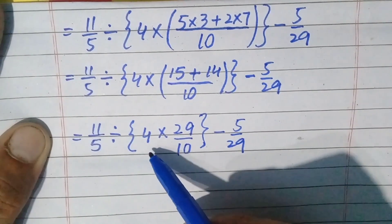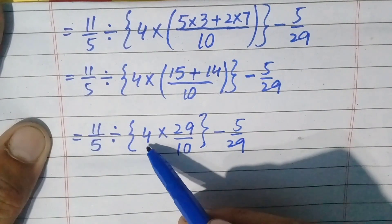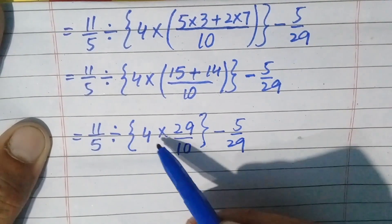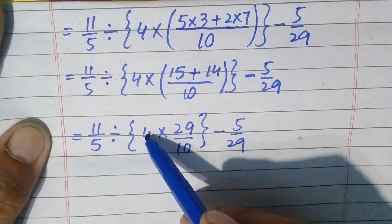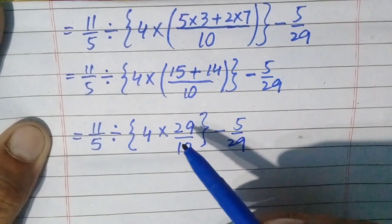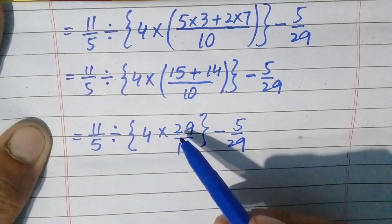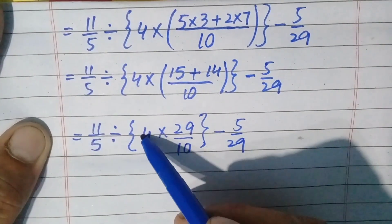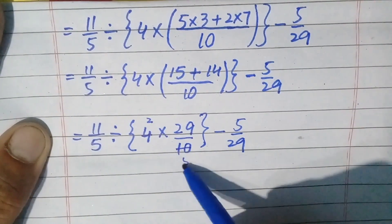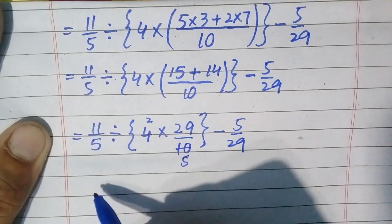We can simplify 4 and 10 since they are divisible by 2: 4 divided by 2 is 2, and 10 divided by 2 is 5. So we multiply 2 with 29 in the numerator and keep the denominator the same.